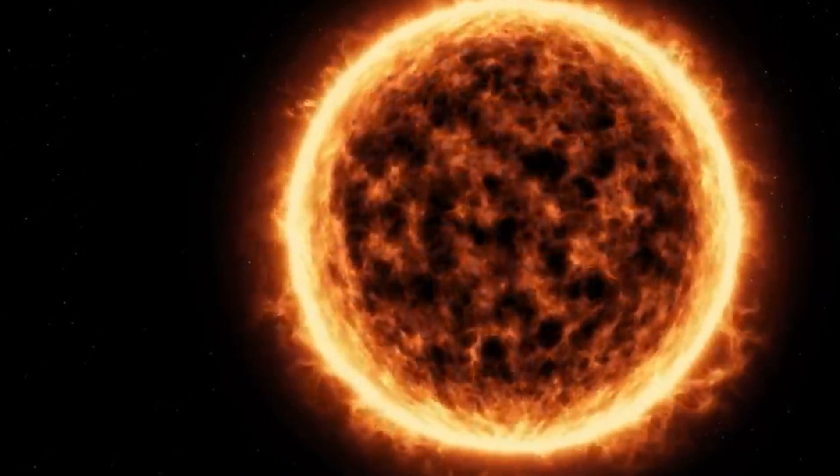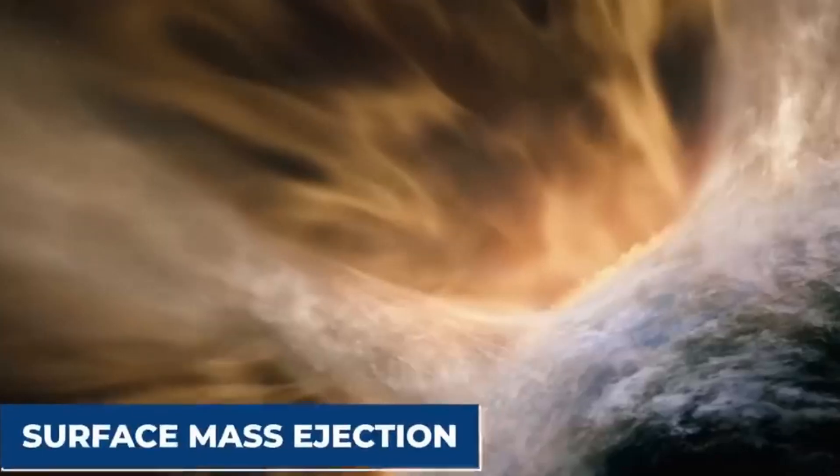It shows convective motion, where heat is transported from the star's interior to its surface through moving gases, causing variations in brightness as cooler gas sinks and hotter gas rises, affecting the star's appearance over time.